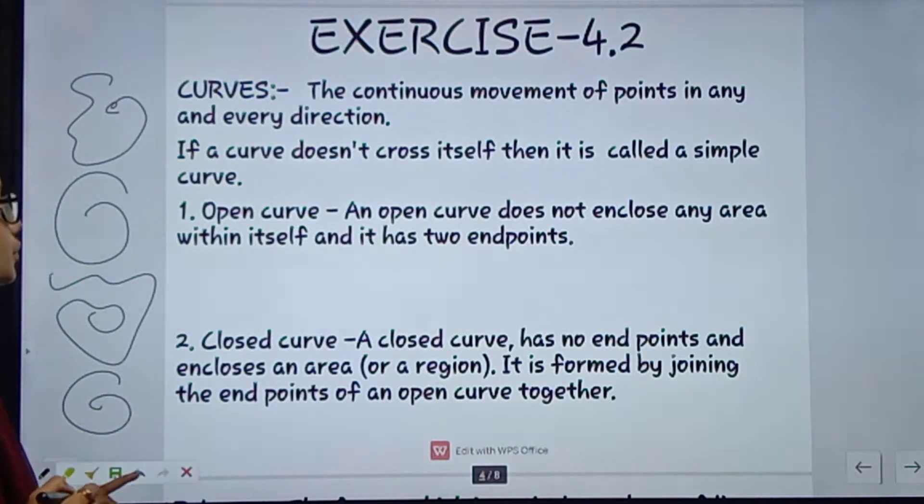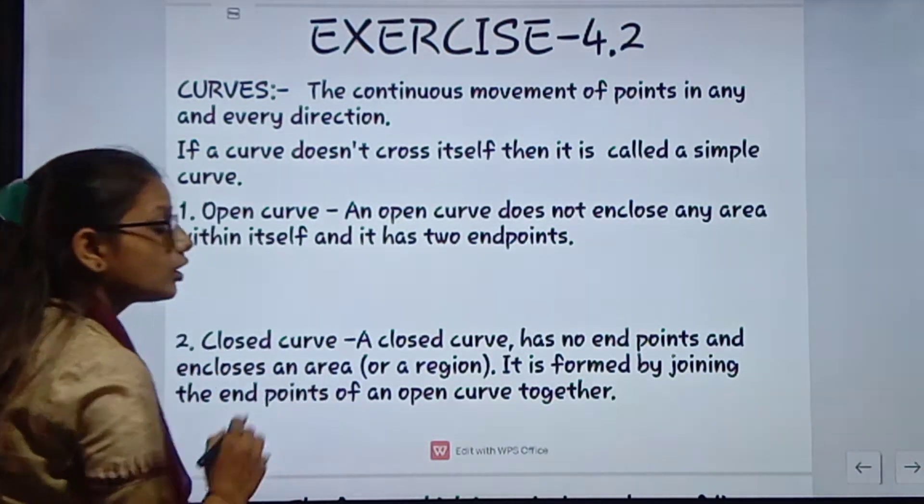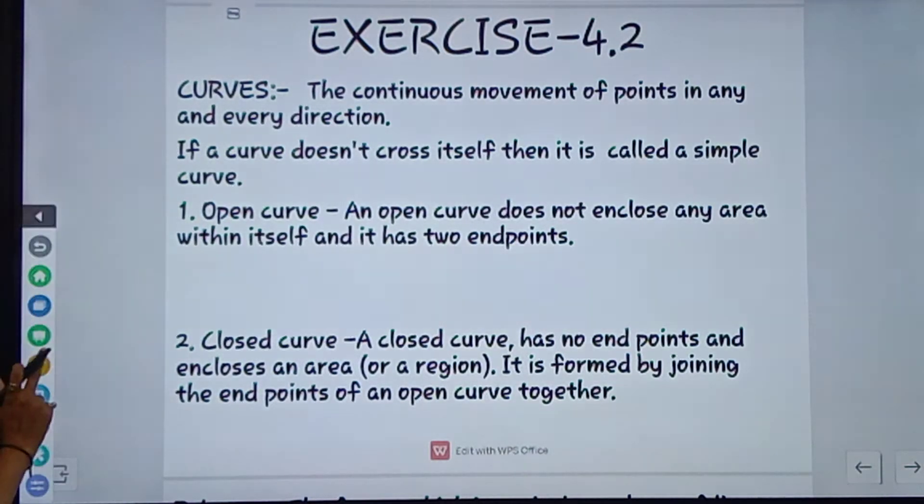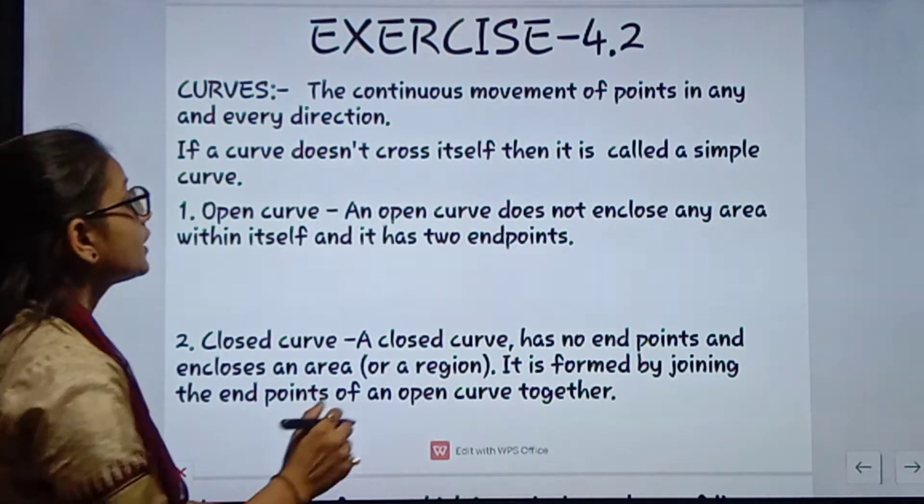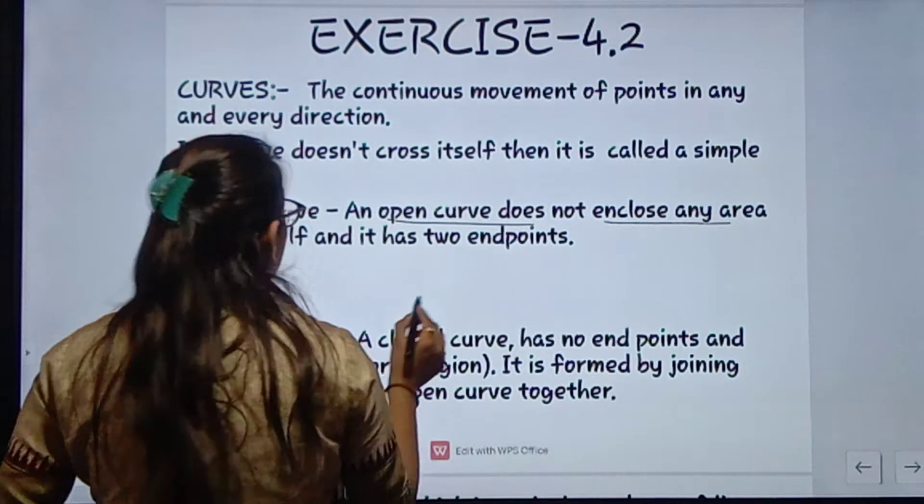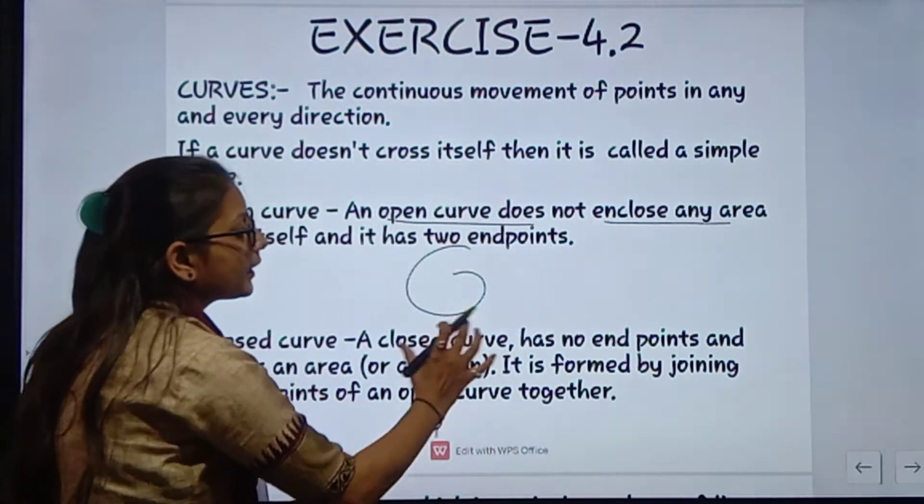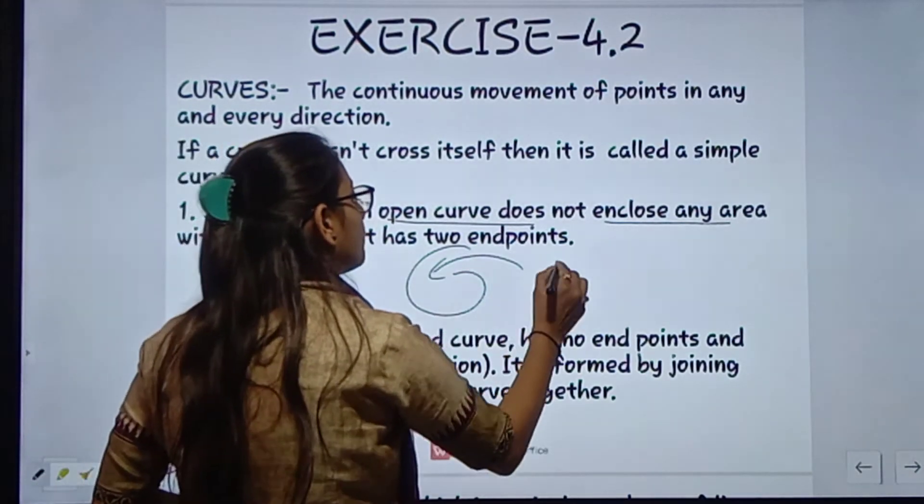Next, curve two types kya hota hai - first is open curve and second is closed. Open curve does not enclose any area. Means yeh dekho, yeh proper area nahi bana raha hai na, yahan se yeh open ho raha hai, to yeh open curve.